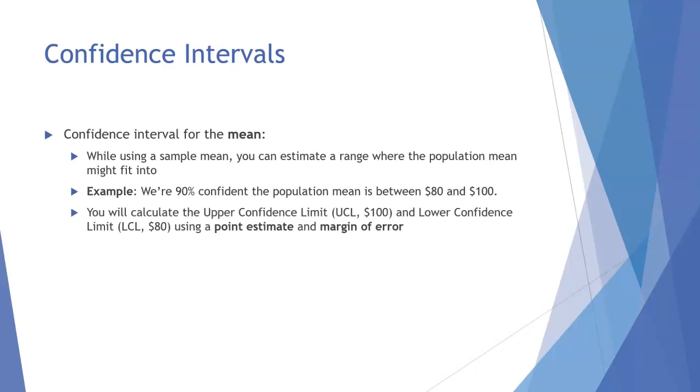You'll do that by calculating what's called the upper confidence limit and the lower confidence limit using a point estimate and a margin of error. Now this is for the confidence interval for the mean.